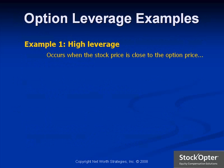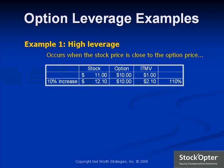High leverage occurs when the stock price or fair market value is close to the grant price. For example, if the current stock price is $11 on an option of $10 and then goes up by 10% to $12.10, the in-the-money value leverage goes up by 110% from $1 to $2.10.